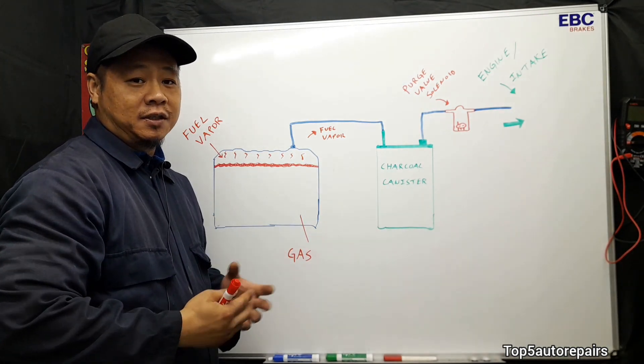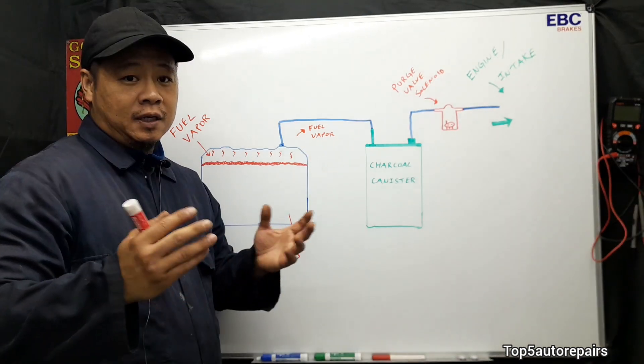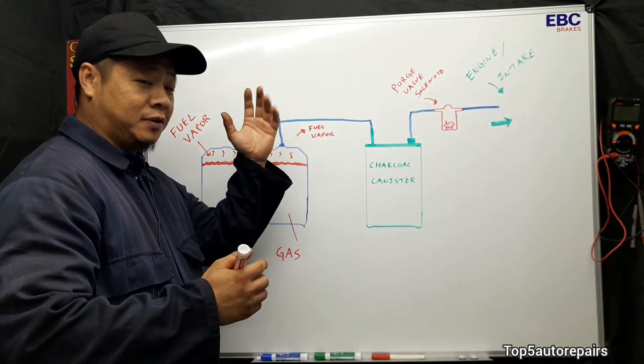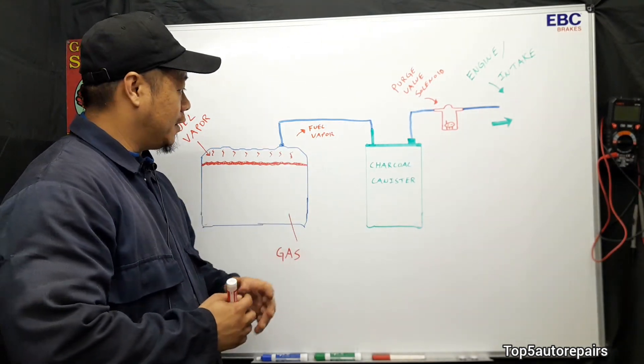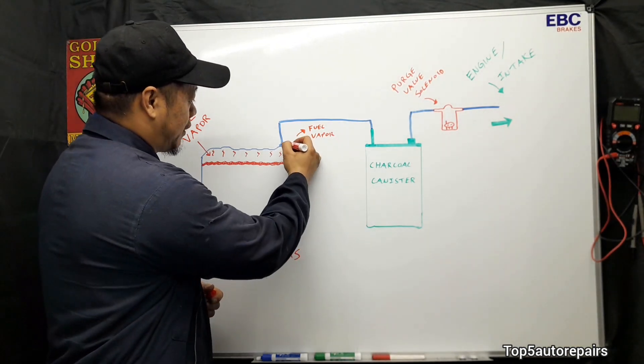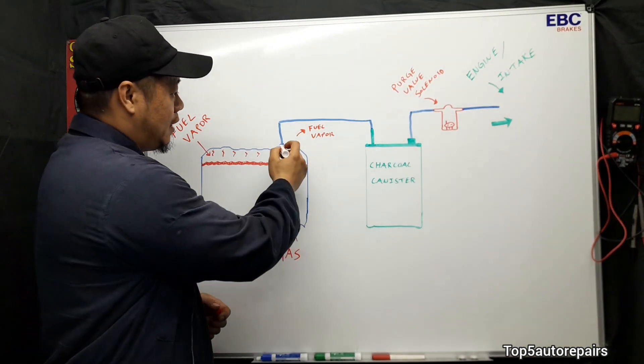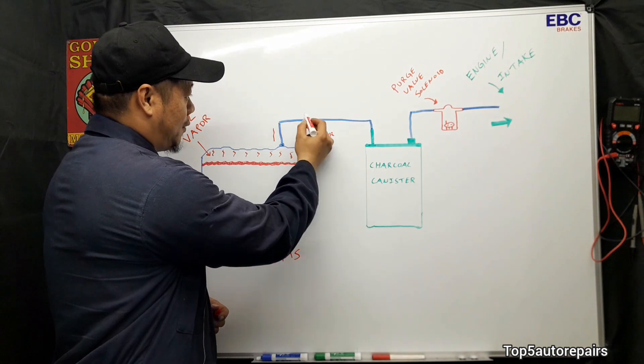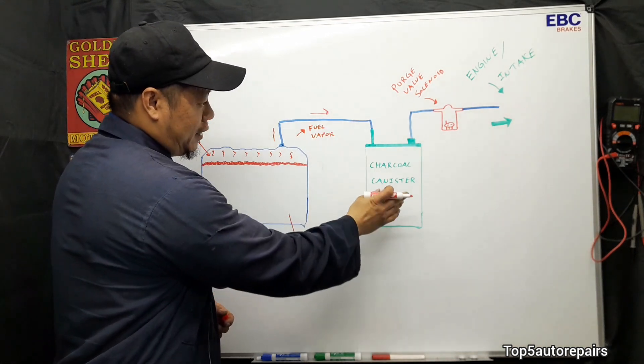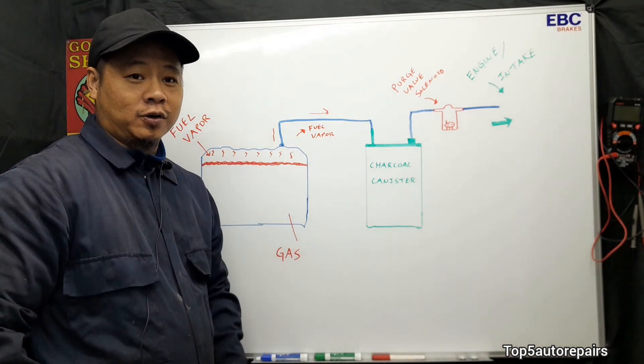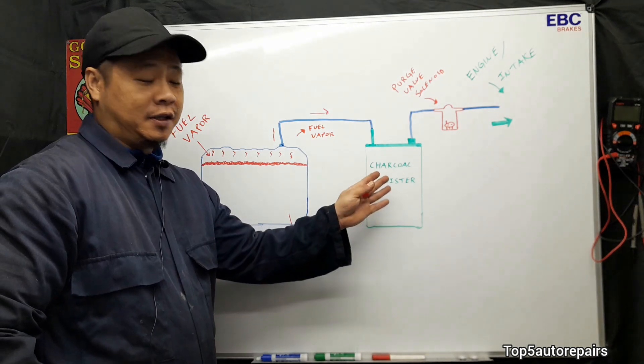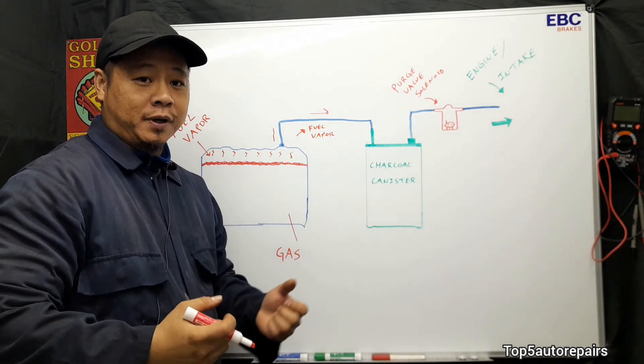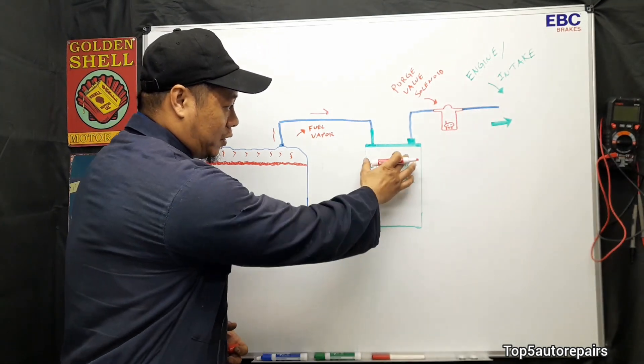Instead of the fuel vapor escaping into the atmosphere, what happens is there's a hose right here mounted on the fuel tank and all the fuel vapor starts to go up and travel through this hose over here and it gets stored into the charcoal canister. The charcoal is very good at absorbing the fuel vapor and it can store a good amount in here.